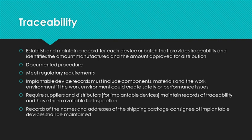Recording manufactured and approved amounts is also a good catch if you find you are shipping more than was approved. Implantable devices have additional traceability requirements. The records must include components, materials, and the work environment if the work environment conditions could create safety or performance issues. Suppliers and end item distributors must maintain records of traceability and have them available for inspection. Records of the names and addresses of shipped package consignees shall be maintained — there is no waffling on this one, you have to keep the records.